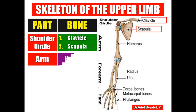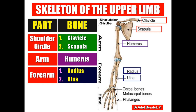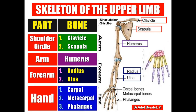The arm has only one bone, which is the humerus. The forearm has two bones: the radius is the lateral bone and the ulna is the medial bone. The skeleton of the hand is divided into three parts: the carpal bones, the metacarpal bones, and the phalanges. The carpal bones are eight, arranged in two rows of four. The metacarpal bones are five, one for each finger. The phalanges are three for each finger, except the thumb which has only two.